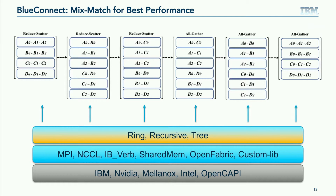Taking a step back: I decompose a single all-reduce operation into multi-stage, parallelizable reduce-scatter and all-gather operations. Because these are independent reduce-scatter operations, it is possible to use different implementations and different algorithms from different vendors. For example, I can use a tree-based algorithm in one stage, but a Mellanox library in another stage because that's the best vendor library. At the end of the day, I can mix and match to deliver the best end-to-end performance.